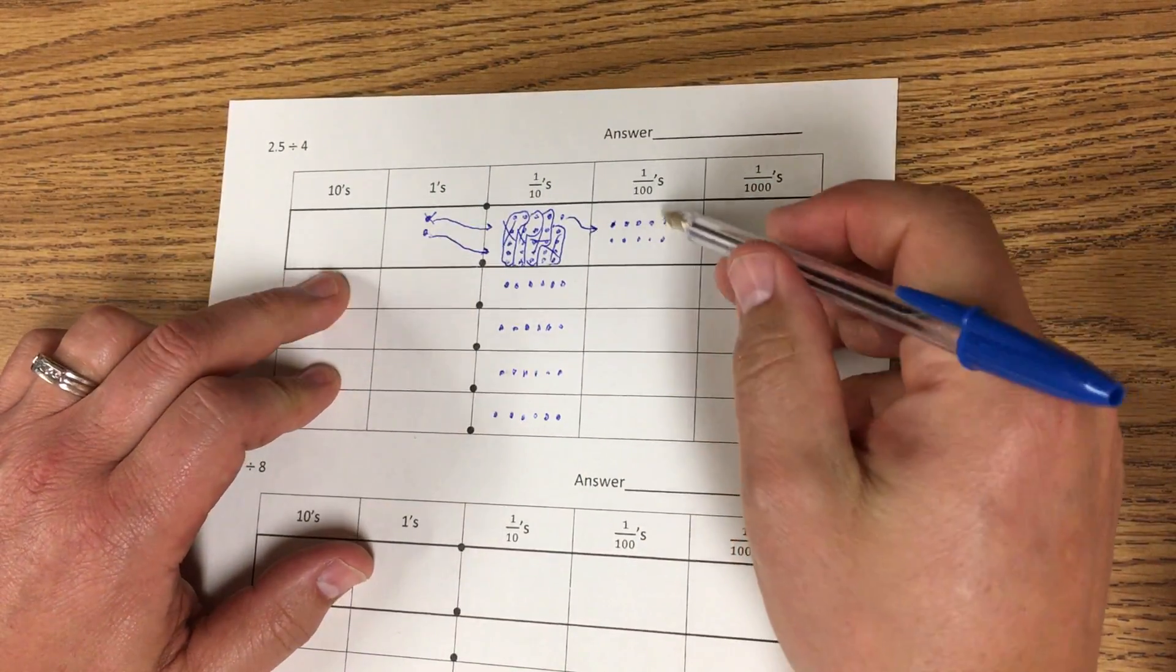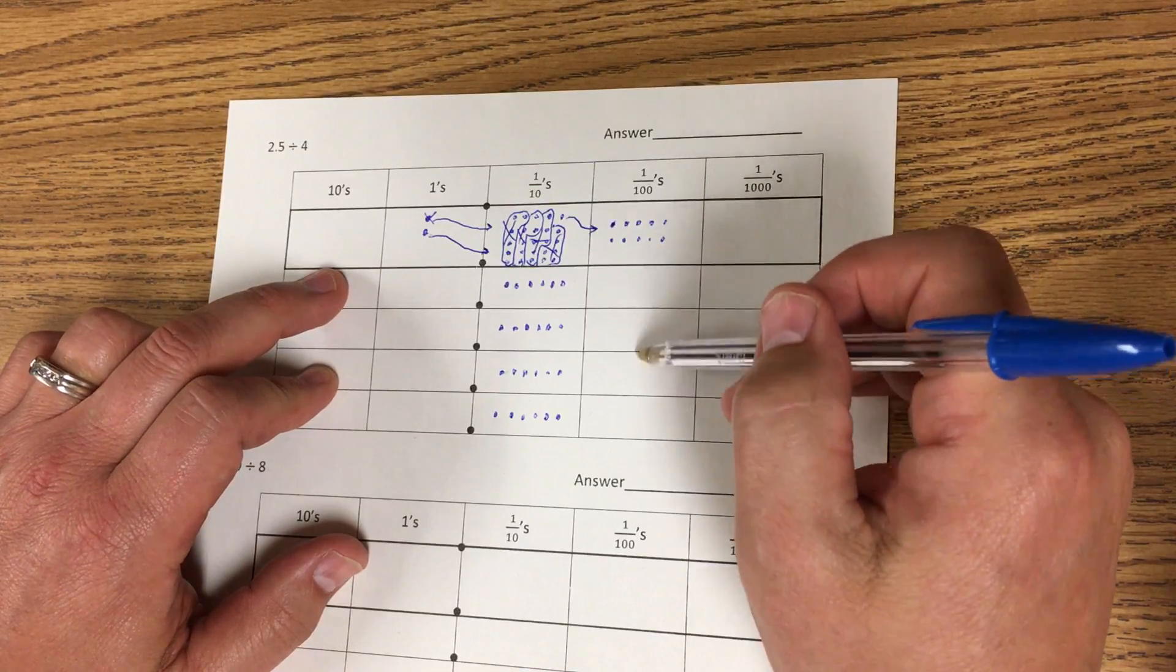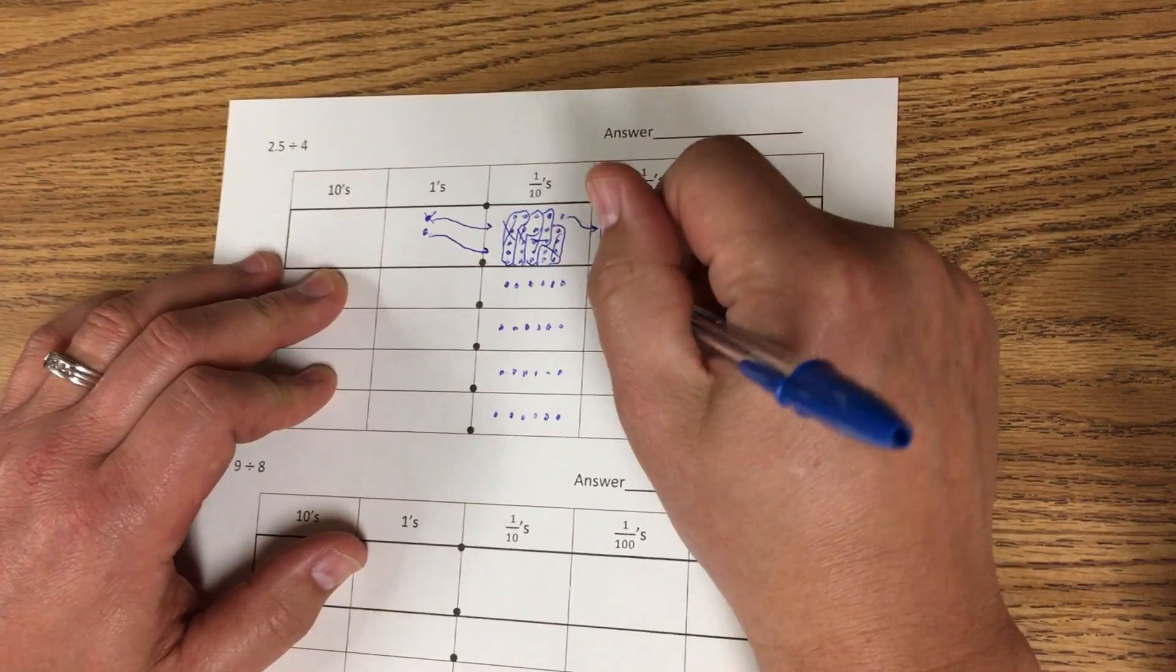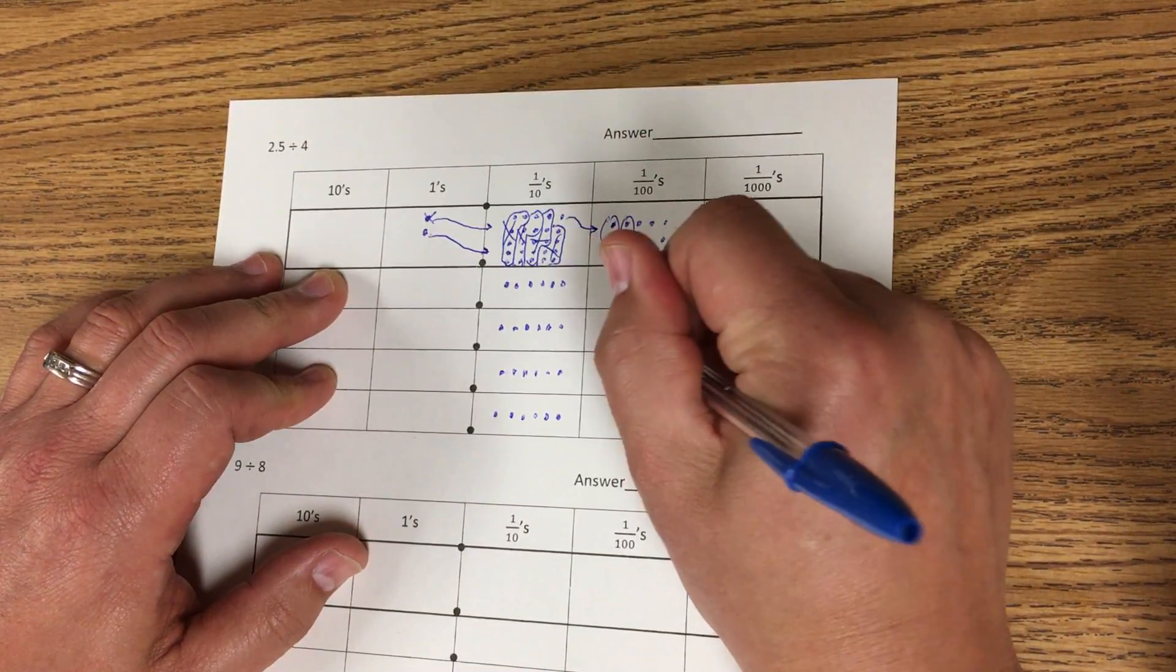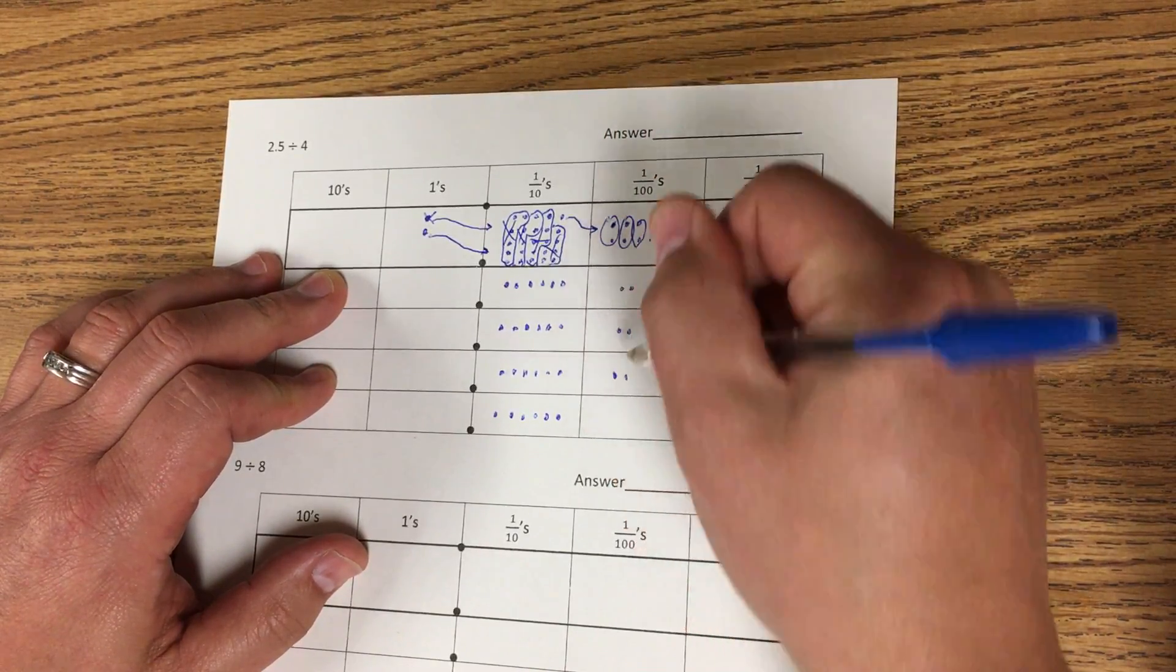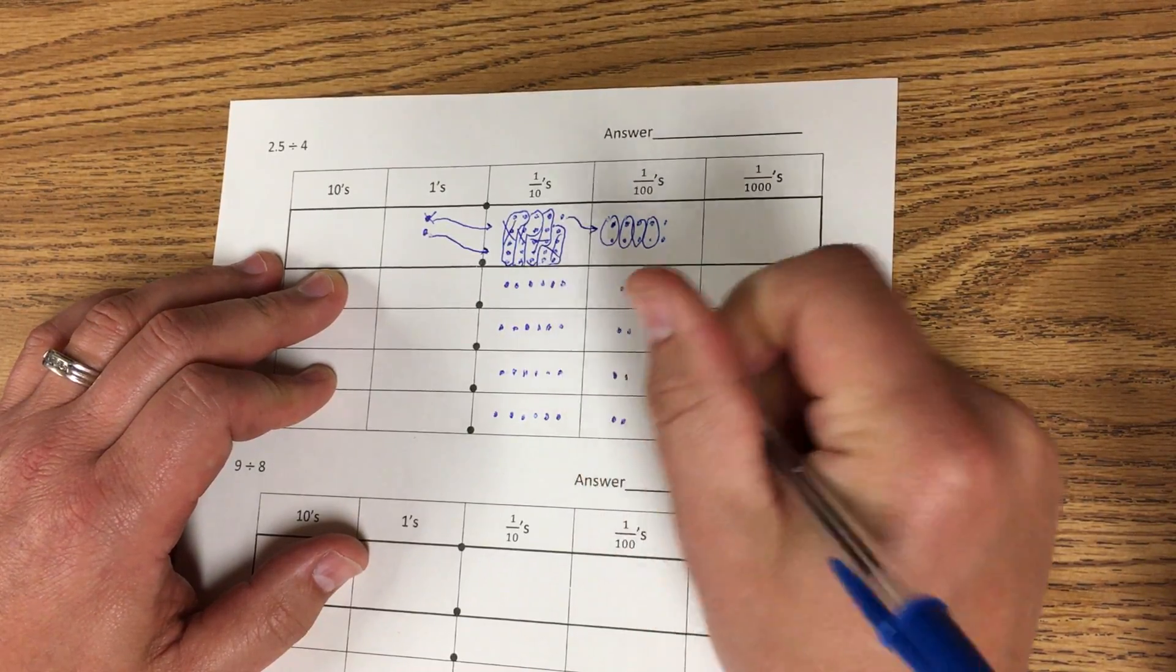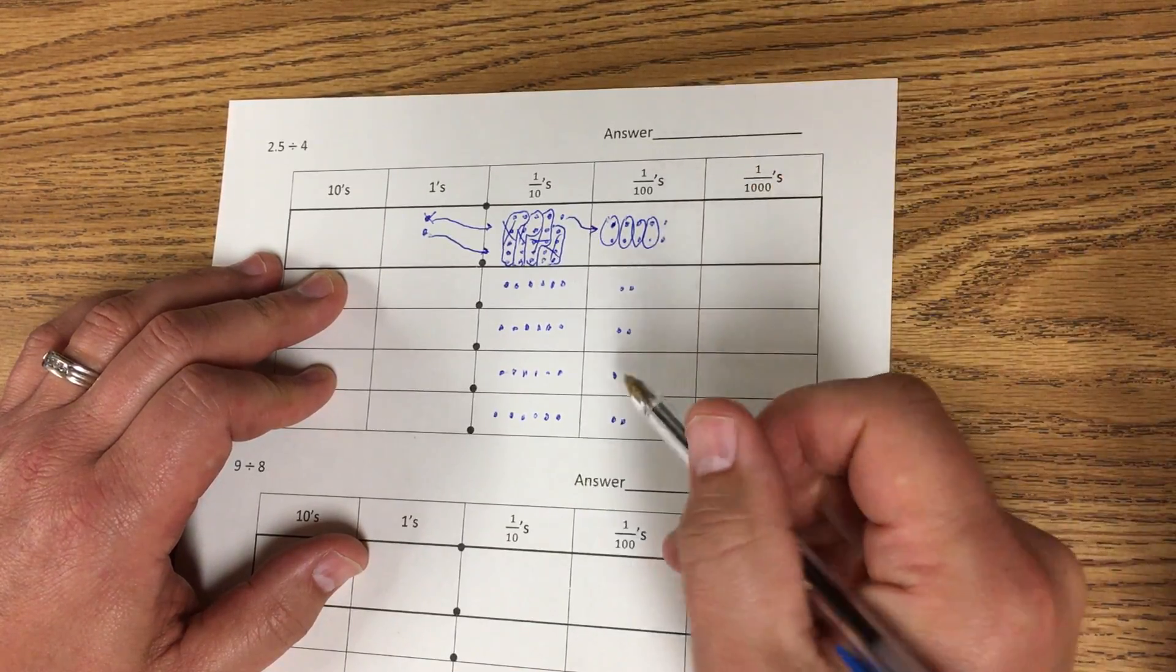And I'm gonna spread these out evenly. Now the largest amount I can take out of 10 to divide it evenly by 4 would be 8. So I'm gonna take 2 and put it here, and 2 and put it here, 2 more and put them here, and 2 more and put them here. Now there's not enough to spread out, I only have 2 left.